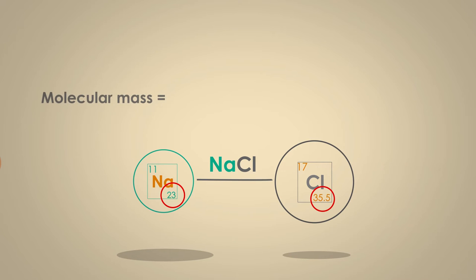this is 1 each, so the molecular mass is 1 times the AR of sodium, 23, plus 1 times the AR of chlorine, 35.5.